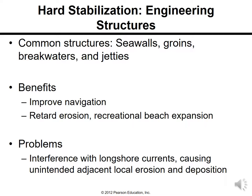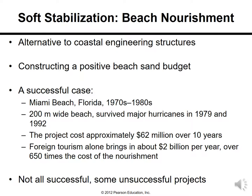Engineering structures — common structures like sea walls, groins, breakwaters, and jetties — can be built to prevent coastal erosion, improve navigation, and retard erosion. For recreational beach expansion, problems include interference with longshore currents, causing unintended adjacent local erosion and deposition.